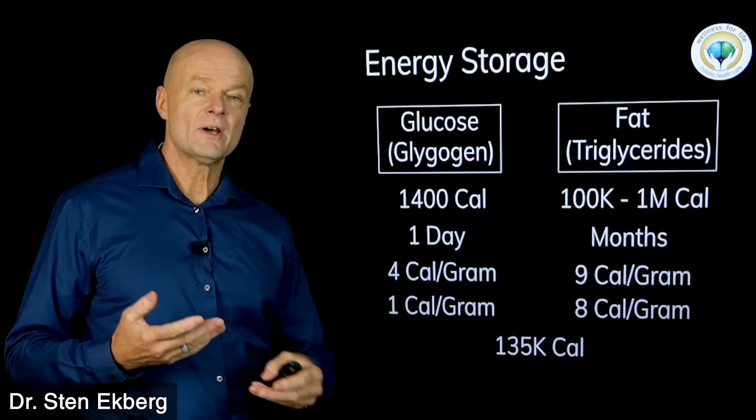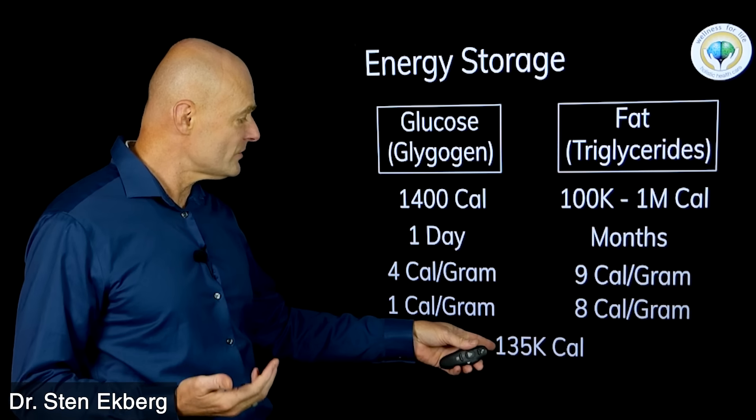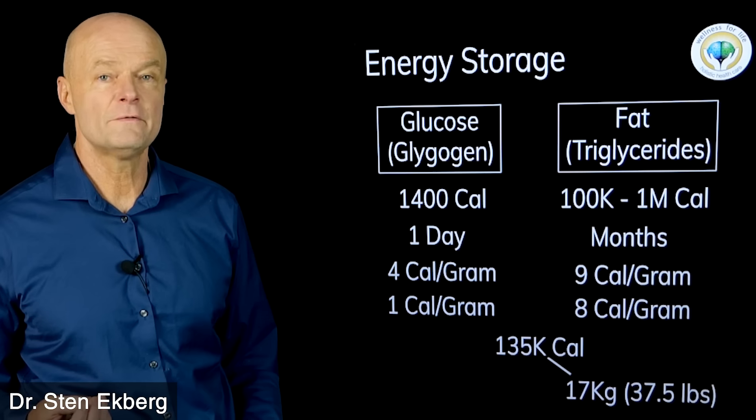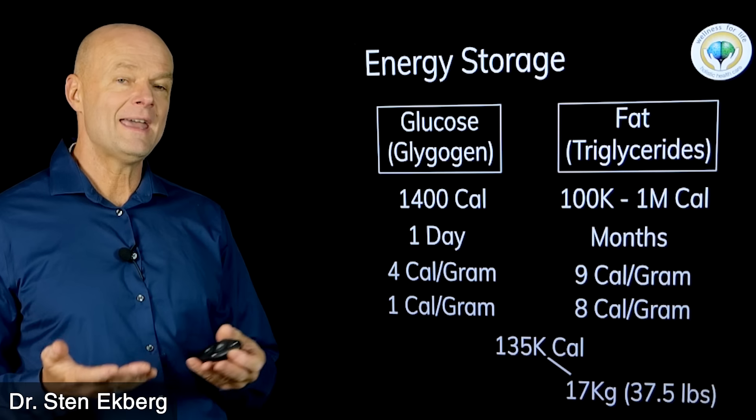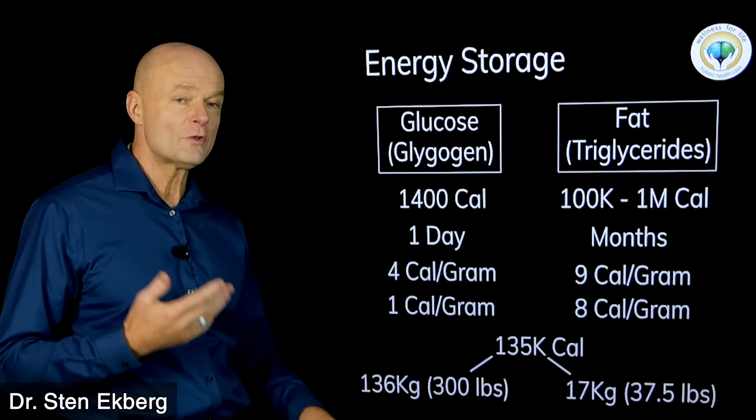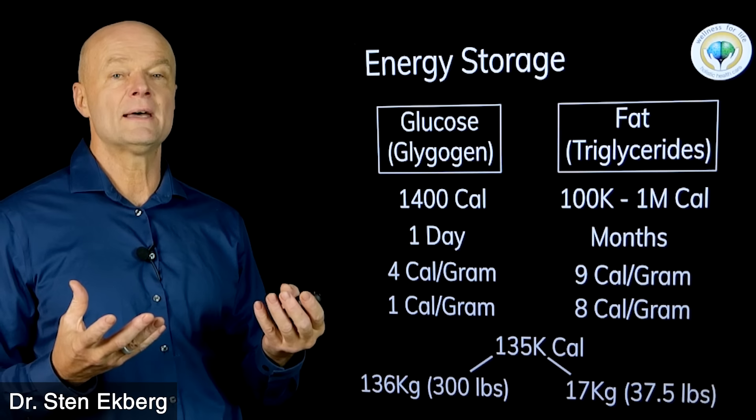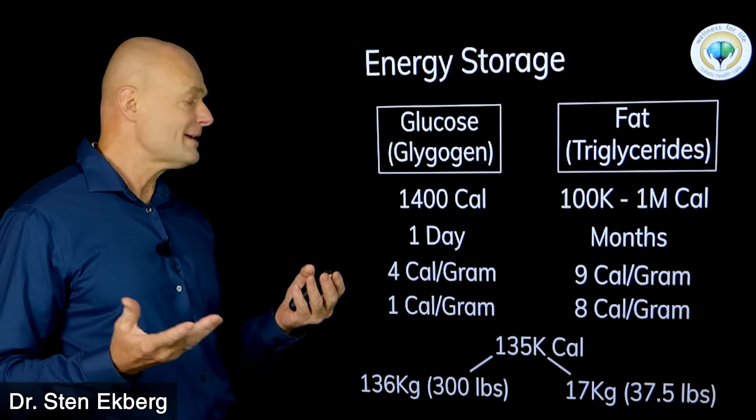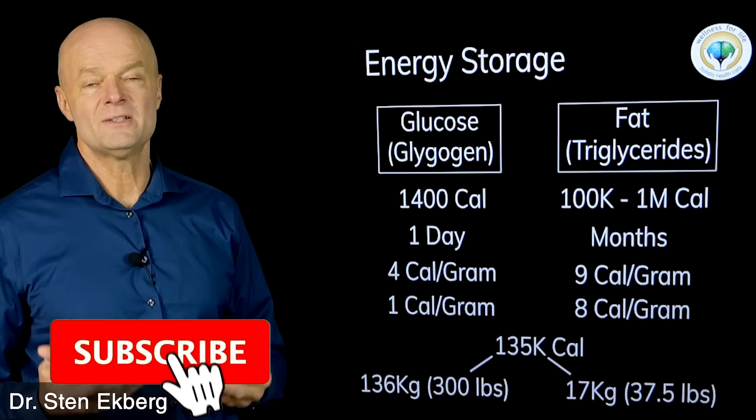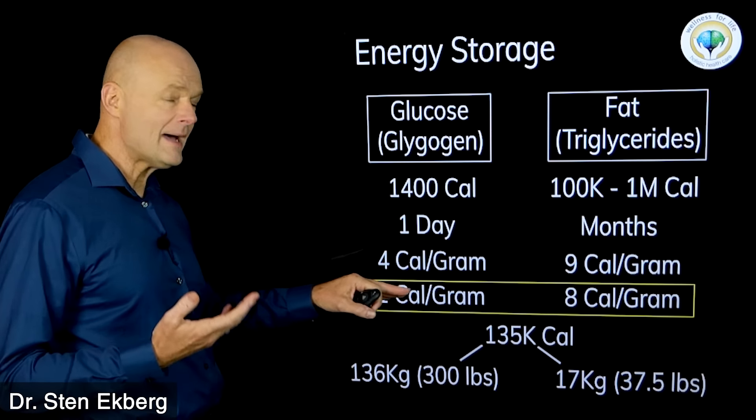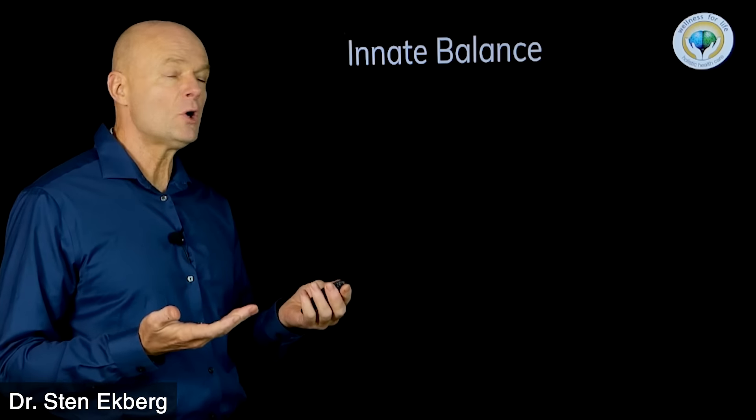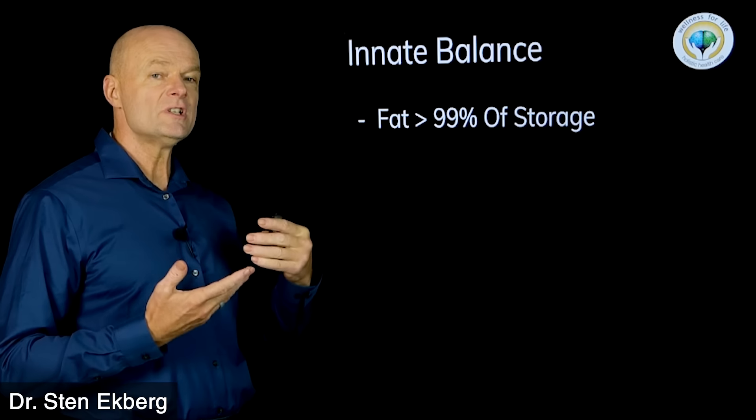The body stores energy mostly as fat because it's the only practical way to do it. If you take the average person of about 150 pounds and 25% body fat, they're going to have about 135,000 calories stored as fat, that's 17 kilograms or 37.5 pounds of fat. If you were to store that same amount of energy in the body as glycogen, you would have to store 136 kilograms or about 300 pounds worth of glycogen by the time it pulls that water to it. Obviously you can't have 150 pounds of other tissue and then store another 300 pounds of energy, it just doesn't work.